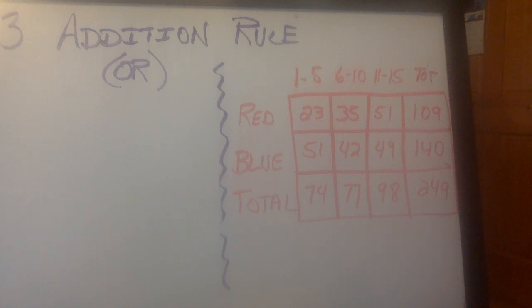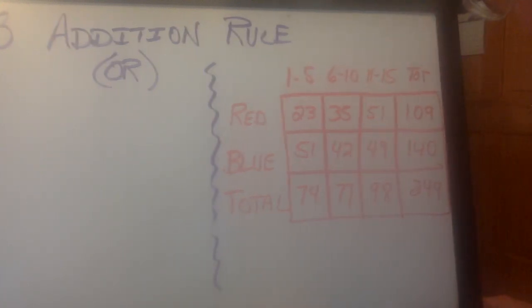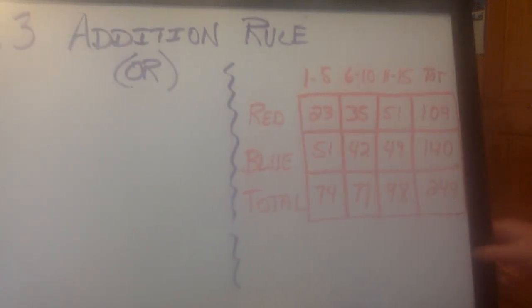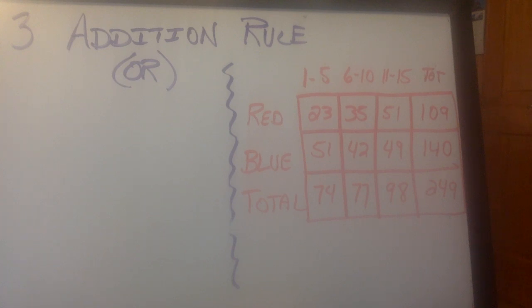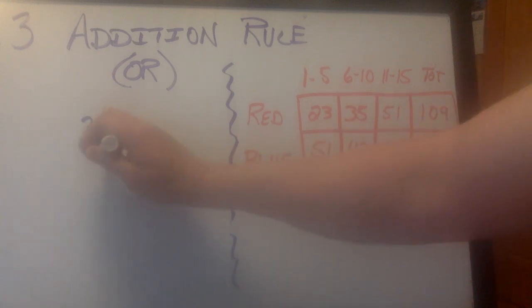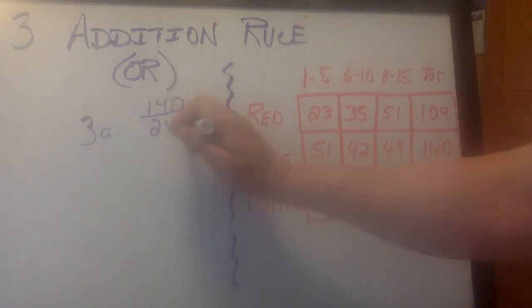So here's our next little section. On the notes, it says number three. It's got this chart. Part A says, find the probability that if I pick one person, they chose blue. That's a pretty straightforward question. There are 249 total people. And the total of blue is 140. So the answer to 3A is simply 140 out of 249.